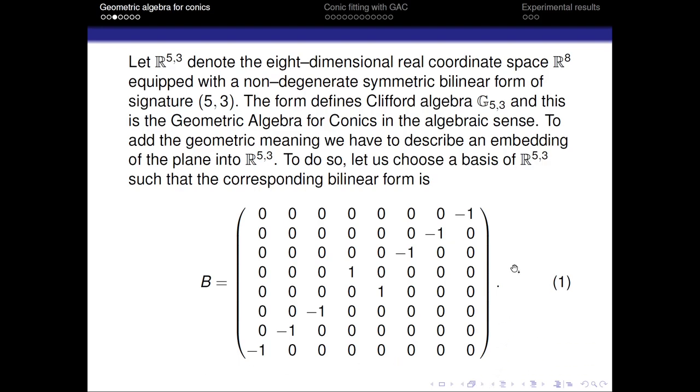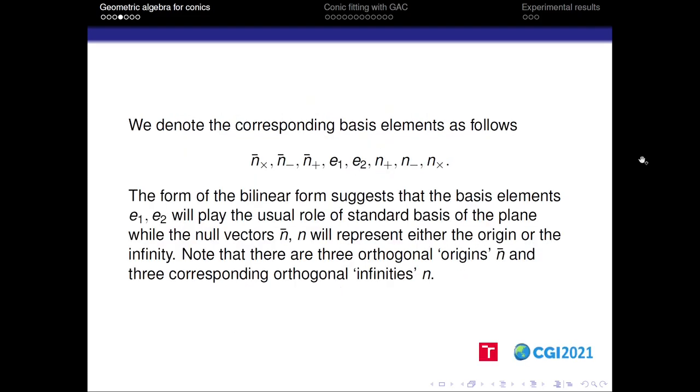To do so we choose a basis such that the corresponding bilinear form is this. We may see on this matrix that its middle submatrix corresponds to the vectors of Euclidean basis and that the three by three blocks in the corners correspond to the vectors forming the null pairs. Consequently, we denote the corresponding basis in this way.